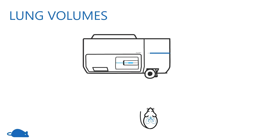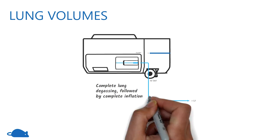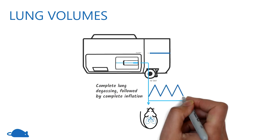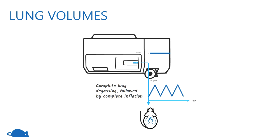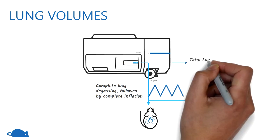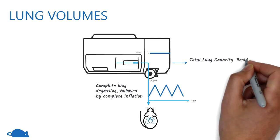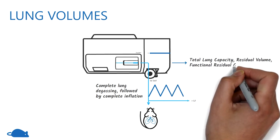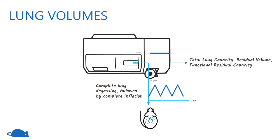In the lung volumes measurement, the lungs are completely degassed after ventilating with pure oxygen and then re-inflated back to total lung capacity. The flexi-vent then calculates the total lung capacity, residual volume, and functional residual capacity.